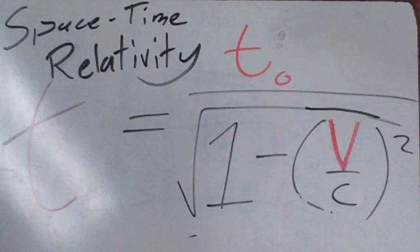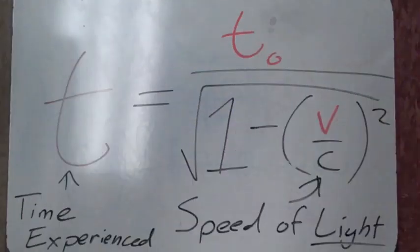This is the equation for space time relativity. Time is equal to the time observed over the square root of 1 minus velocity over the speed of light squared. This equation solves for the time an object experiences and it has a constant of the speed of light.